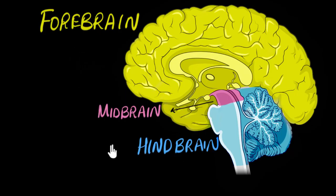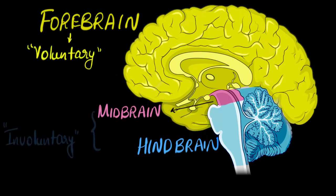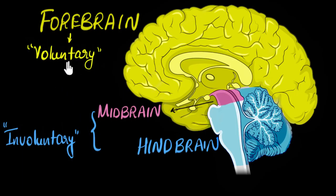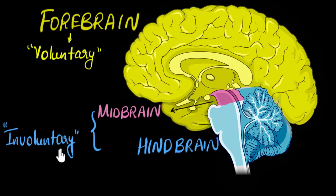So what are the functions of these parts? To get a broad sense, we can think that the forebrain is responsible for all the voluntary functions, and the midbrain and hindbrain together are responsible for all the involuntary functions. Voluntary means all the actions you carry out consciously by thinking about them — like taking a walk, talking to someone, or deciding to watch this video. Involuntary functions are things happening in your body that you're not in control of, like your heart beating or digestion — those are mostly taken care of by the midbrain and hindbrain.